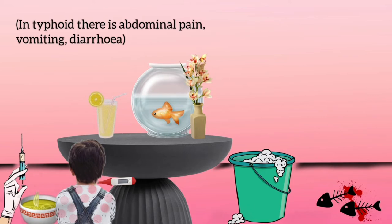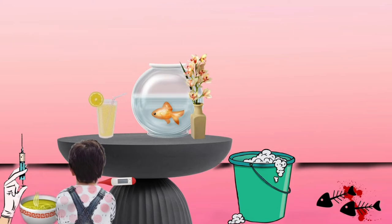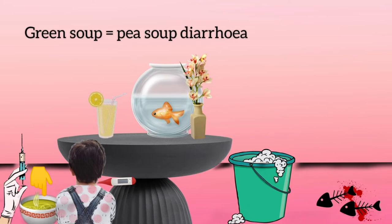Diarrhea is seen in typhoid fever, which is specifically called pea soup diarrhea. The boy has been served a green soup, which represents pea soup diarrhea seen as a complication in enteric fever.